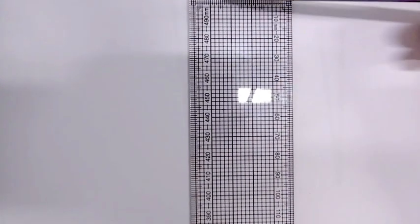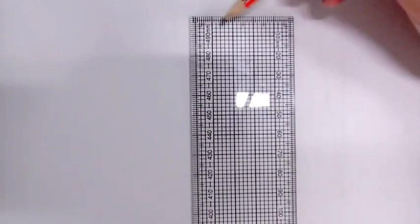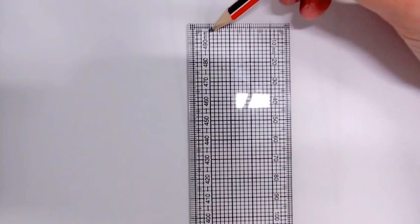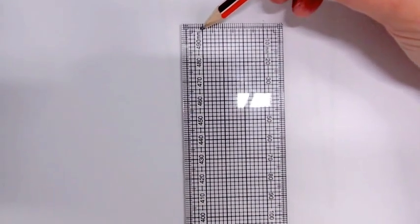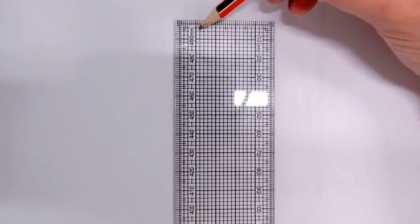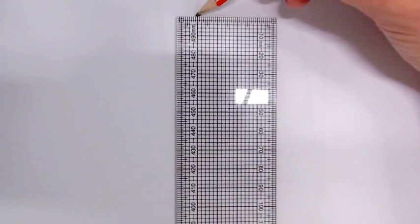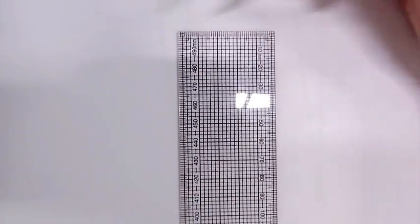Each heavy line equals one centimeter. The smaller squares—there are five between the heavier lines—equal two millimeters squared. So we have a centimeter from here to here, and each little square is two millimeters.